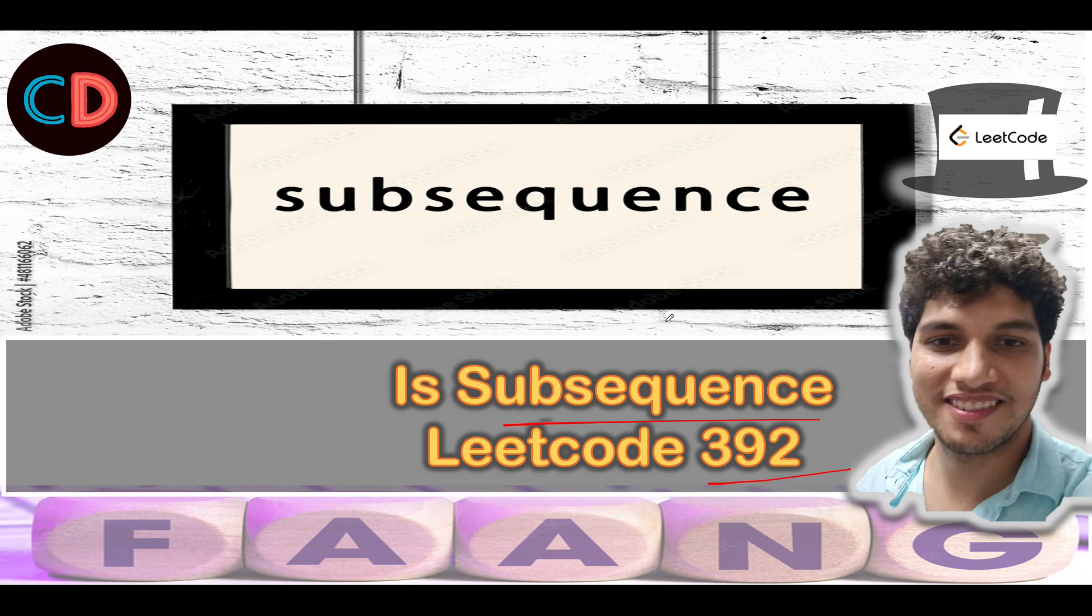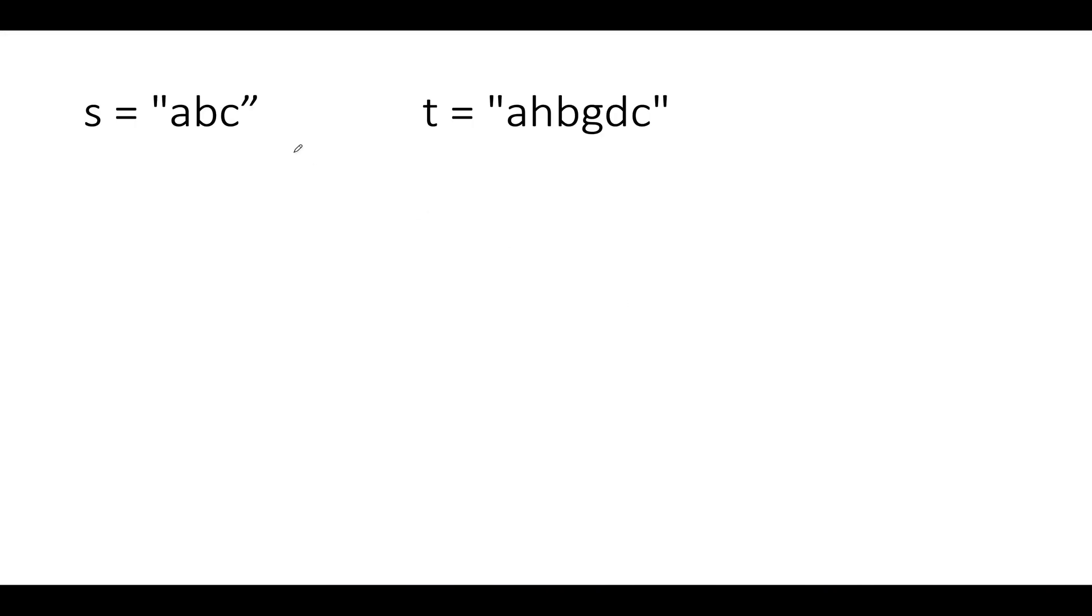LeetCode 392 is an easy level question on LeetCode, and I totally feel the same. Let's take the same example that was specified in the question. By definition of subsequence, all the characters in s should occur in the same order in t. So what do we do? We take two pointers i and j to keep track of the characters that we are currently visiting in both of them.